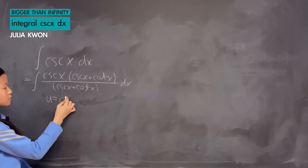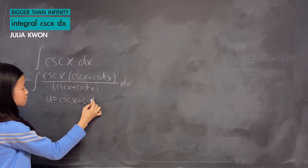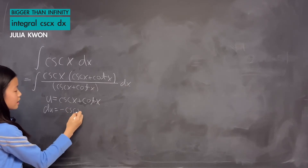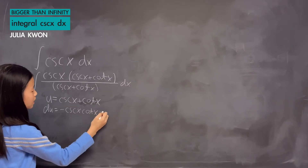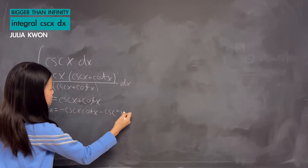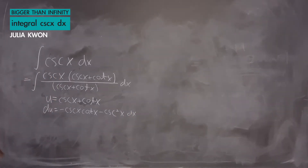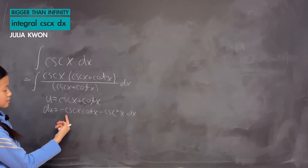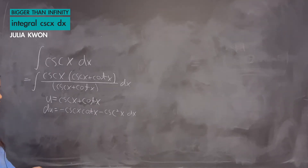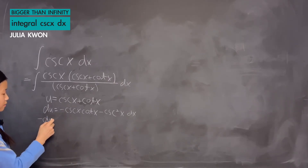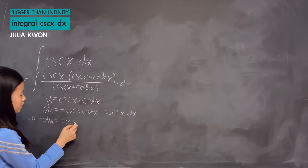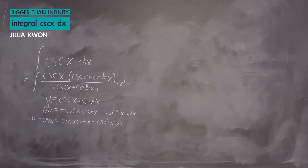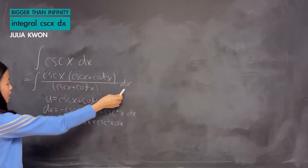We set u equal to cosecant x plus cotangent x. Then we find du, which equals negative cosecant x times cotangent x minus cosecant squared x, dx. If we multiply cosecant x by (cosecant x plus cotangent x), we get what we have for du except with all negative signs. Multiplying both sides by negative one, we get: negative du equals cosecant x times cotangent x plus cosecant squared x, dx.